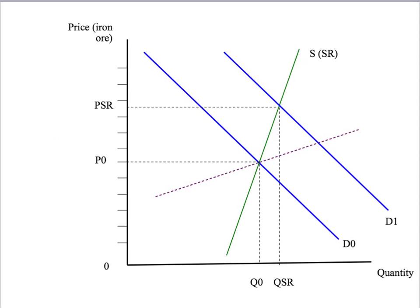But over time, mines adjust. Existing mines are able to increase their output, and new mines are able to be developed and brought online. So in the longer term, our supply curve is going to be much more elastic or flatter. That's represented by the dotted line on our demand and supply diagram. Remember, it goes through our original equilibrium, because if nothing had changed, nothing would have happened. However, the price has gone up, and we want to ask what that has done to the change in quantity in the long run.